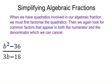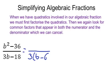In this next example, we have b squared minus 36 over 3b minus 18. Again, the first thing we need to do is factorise everything. On the bottom, 3b minus 18 factorises nicely to 3(b minus 6).